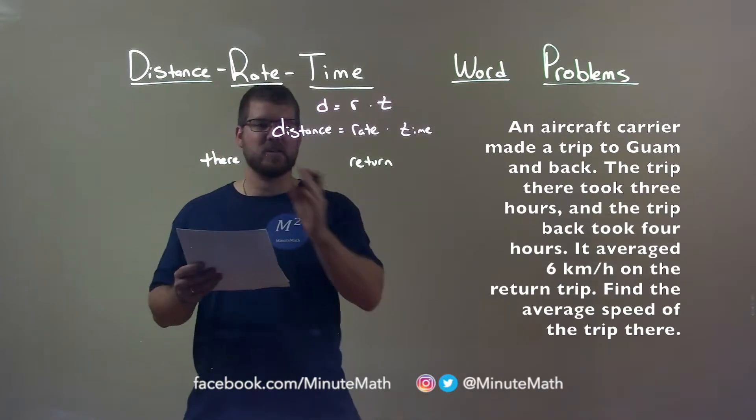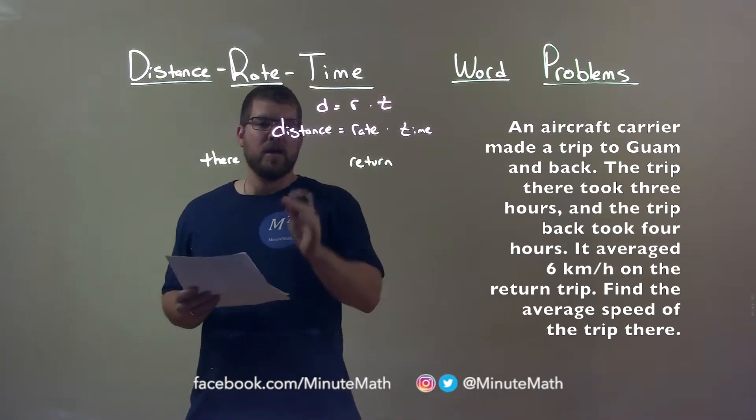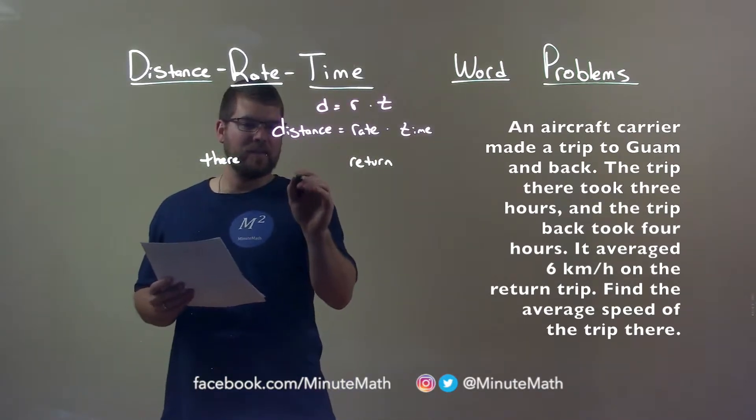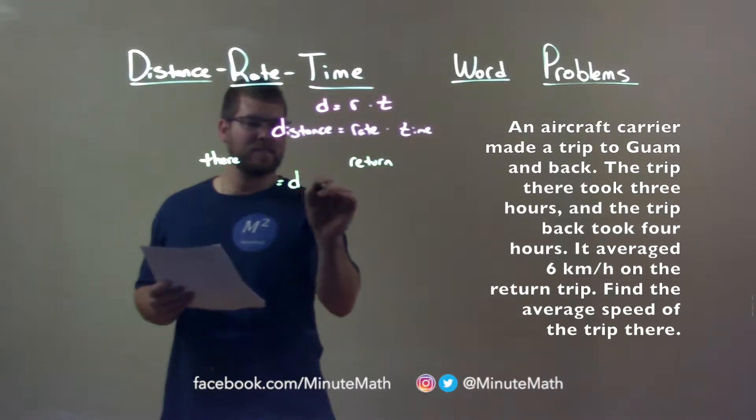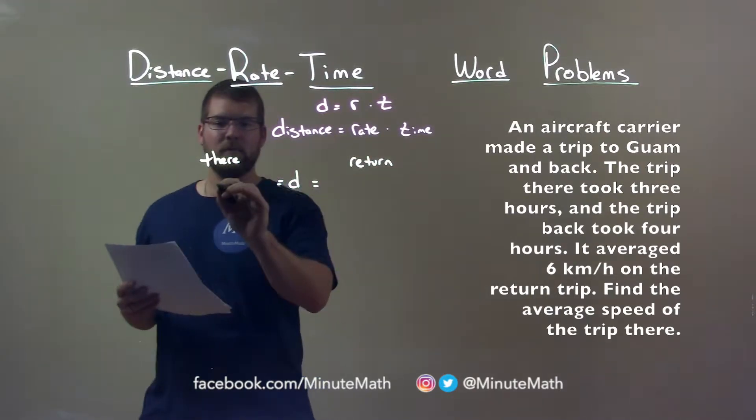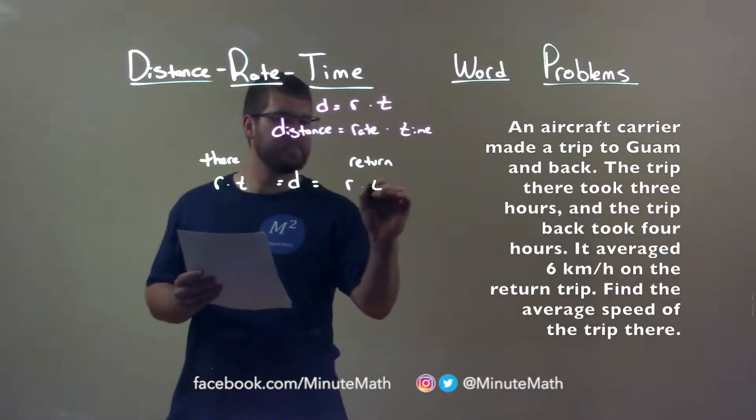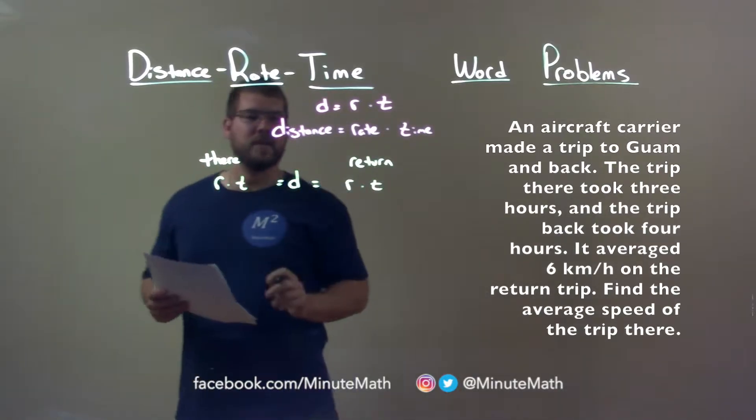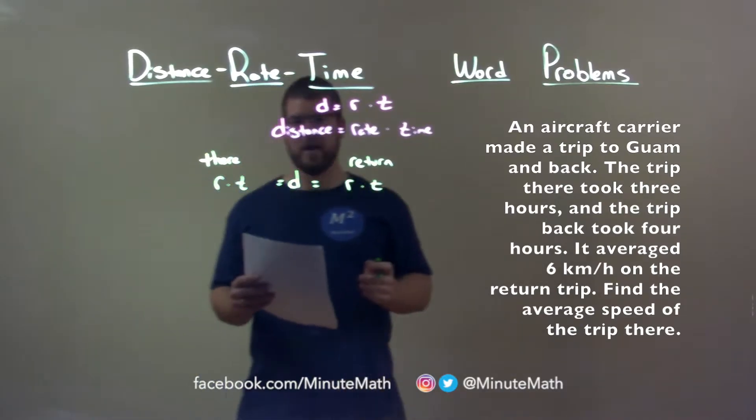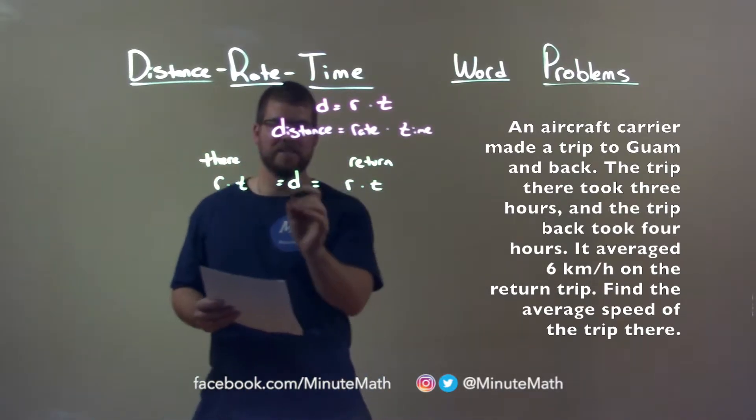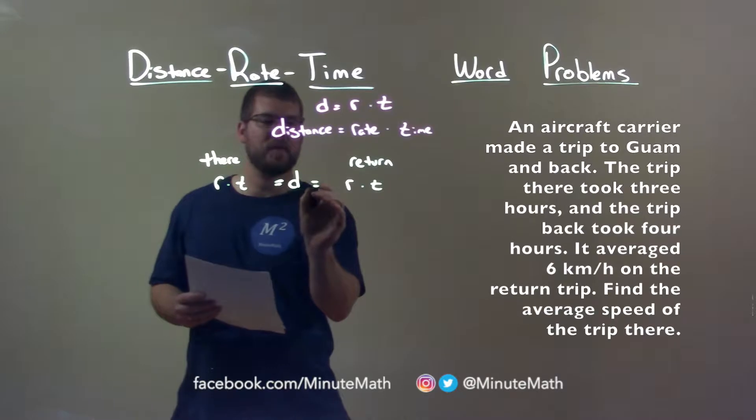Well, since the two distances are the same, we can see that distance is going to equal our formula for rate times time in both directions. There and back. So distance equals rate times time, distance equals rate times time. Distance is the same, so we can set them equal to each other.